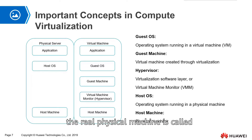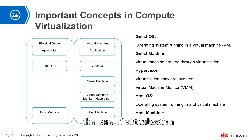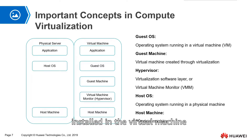Let's revisit. The real physical machine is called the host machine. The operating system installed on the physical machine is called the host OS. The core of virtualization is the hypervisor, also called VMM. The virtual machine is called the guest machine, and the operating system installed in the virtual machine is called the guest OS.